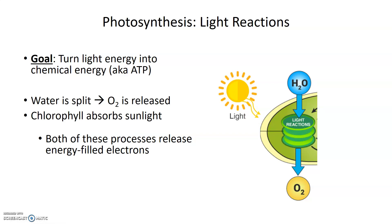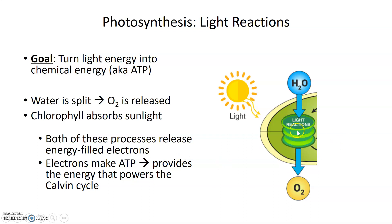Both processes — chlorophyll absorbing sunlight and water being split to ultimately generate oxygen — release a large number of energy-filled electrons. Particular electron carriers load up like trucks with these energy-filled electrons and bring them to an electron transport chain. There's an electron transport chain within the chloroplasts of plant cells that provides the energy to make ATP, which then ultimately provides the energy to power the Calvin cycle.